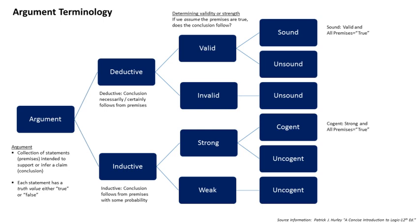The conclusion for a valid deductive argument is already contained in the premises since its truth is strictly a matter of logical relations — it cannot say more than its premises. Inductive premises, on the other hand, draw their substance from fact and evidence, and the conclusion accordingly makes a factual claim or prediction. Its reliability varies proportionally with the evidence. Induction wants to reveal something new about the world — one could say that induction wants to say more than is contained in the premises.